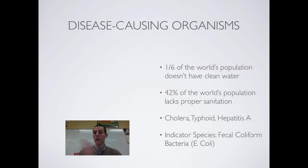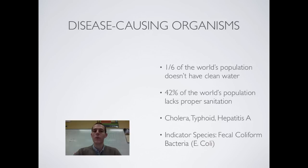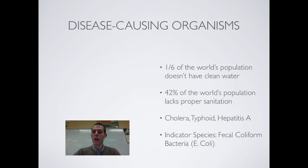The third problem associated with human wastewater is disease-causing organisms. One-sixth of the world's population doesn't have clean water — in a world of 7 billion people, this is something like 1.5 billion people without access to clean water. Over 40% of the world's population lacks proper sanitation, such as sewage systems, toilets, and basic facilities for washing hands. The biggest waterborne illnesses are cholera, typhoid, and hepatitis A. All of these diseases are caused by pathogens that exist in water, all of them can be deadly, and they are a big deal in areas without proper sanitation.